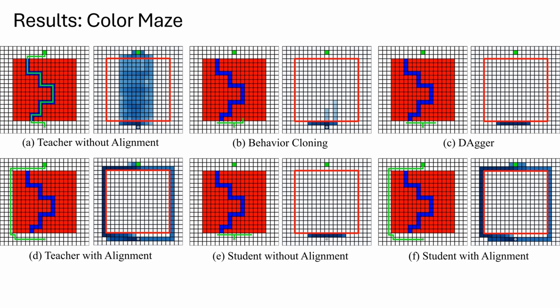We first test our method on a maze navigation task in a tabular setting. The objective of the agent is to reach the goal, visualized as the green cell, from the gray starting point. The episode ends if the agent steps into lava visualized as red cells. The teacher can observe the type of neighboring cells, while the student cannot distinguish between blue path cells and lava, which leads to a teacher-student asymmetry.